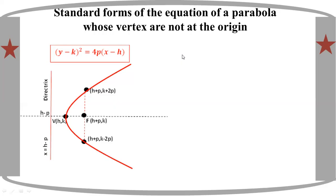This is the translated form. Now, if you want to see y minus k, the whole square is equal to 4p times x minus h. The whole square is translated into the original. Now if you want to see y minus k, the whole square is equal to 6p times x minus h.